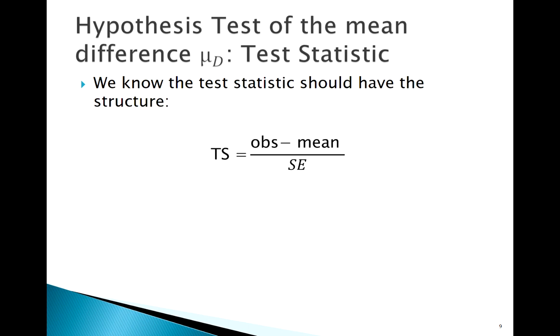What if we want to do a hypothesis test here for the mean difference? We know the general format of our test statistic looks like this: whatever we observe minus the mean over the standard error. Normally we're going to be using t for matched pairs.